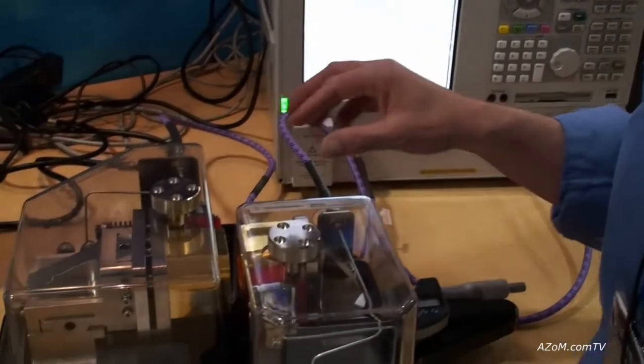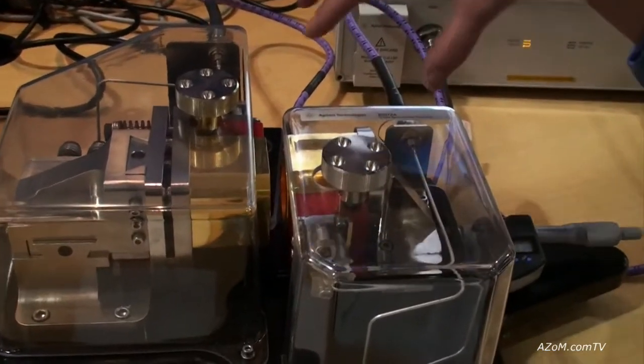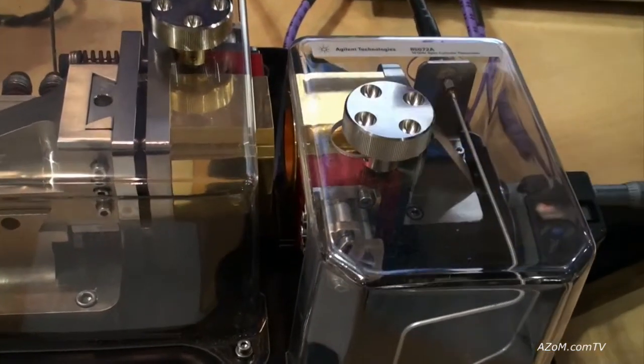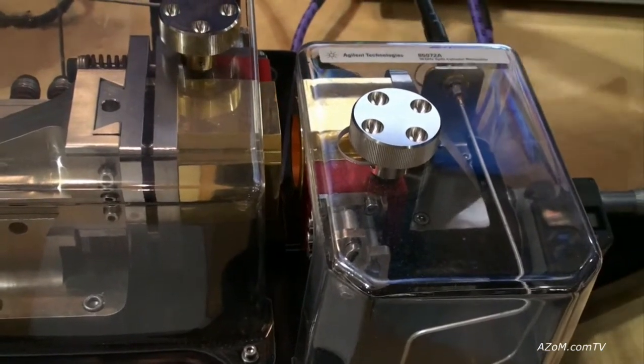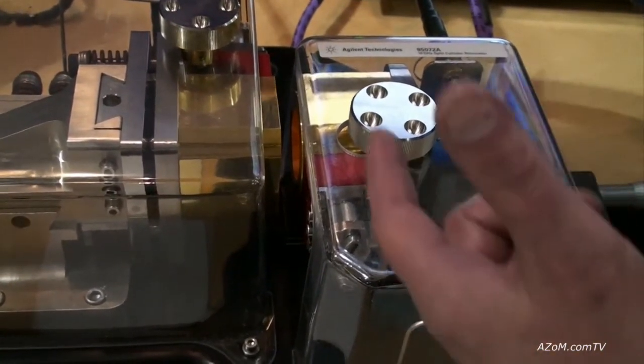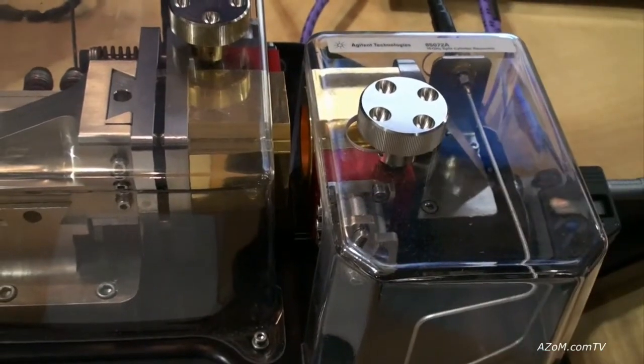So if we look at the fixture, it's a couple of very finely machined cylinders. We have the energy coming in from the network analyzer to coupling loops through holes in the sides of the cylinders.